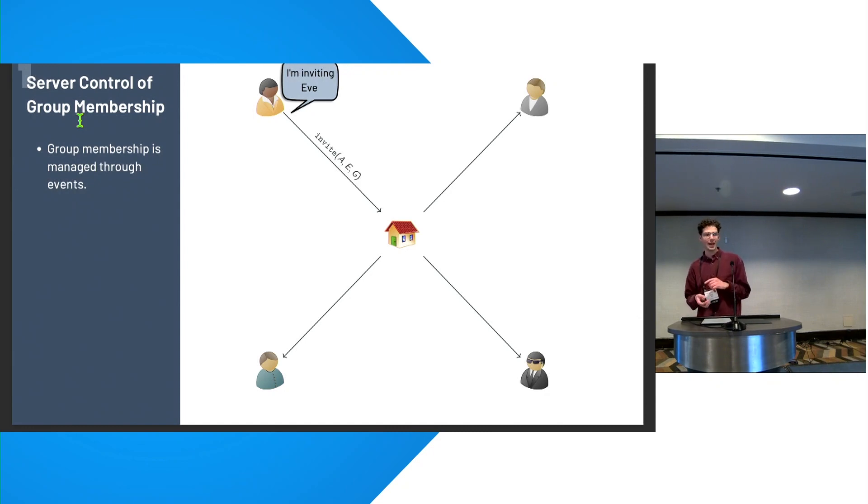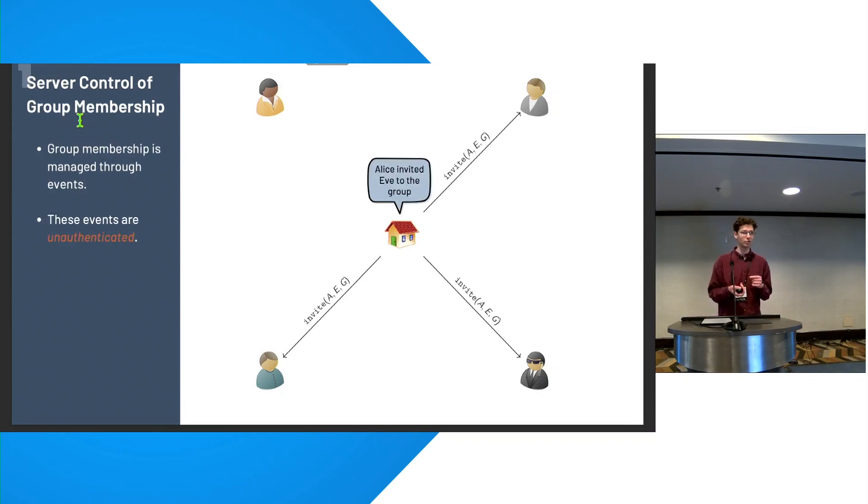So our first attack regards the server's control of who is in a group. The way they manage group membership in Matrix is just by sending messages. So maybe Alice says, I'd like to invite Eve. But these messages, unlike user messages, aren't encrypted and they aren't authenticated. So it's pretty trivial to just forge them. So here the home server can say, I'd like to invite Eve to the group. And now Eve can decrypt all the messages that the group sends. So this isn't a fancy attack. The other members can see in the member list that this extra user has been added. But nonetheless, it's a hole in the protocol design.